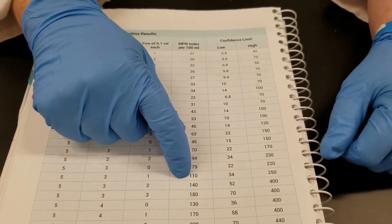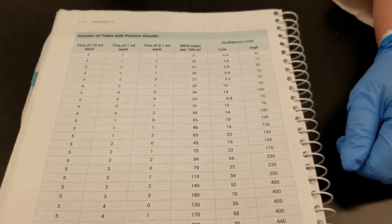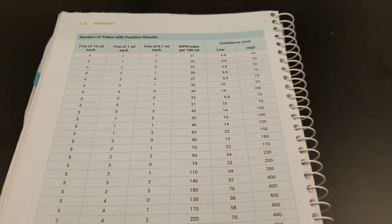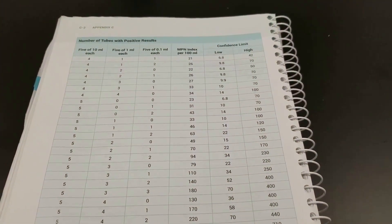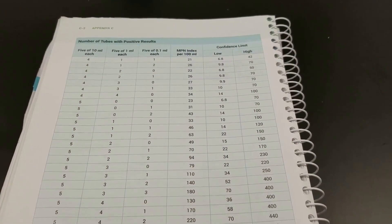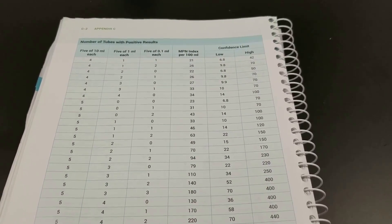But this is the number that you're looking here. This is 110 per hundred mils. So, it's an estimate of giving you the number of bacteria per milliliter in that water sample.